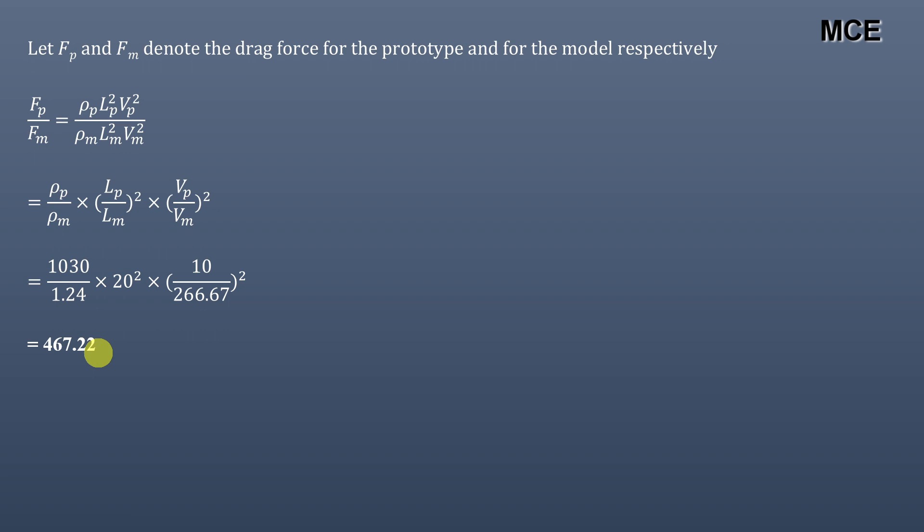This is how you can find the dynamic similarity between the model and the prototype when Reynolds model law is applicable. I hope this solution video was clear and you learned something new. If you found this video helpful, please subscribe to the channel and share this video. Thanks for watching and stay tuned.